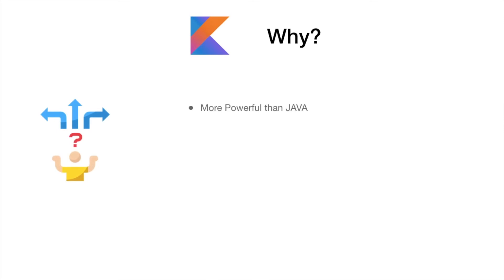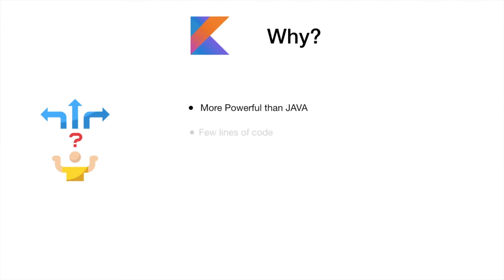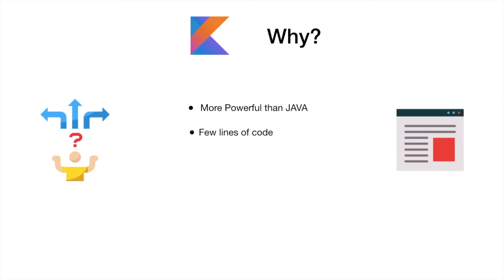Kotlin is more powerful than Java compared. It requires fewer lines of coding — about 20% less coding compared to Java. So it is very easy. If you are interested, just 500 lines of Java coding can be reduced significantly to achieve the same result.